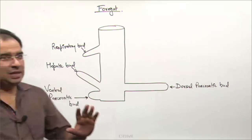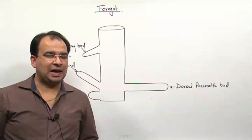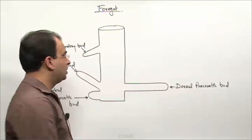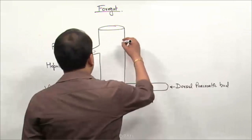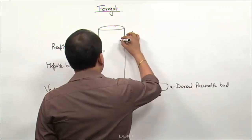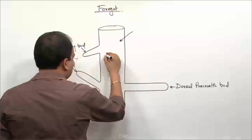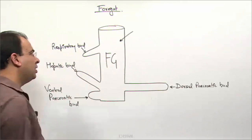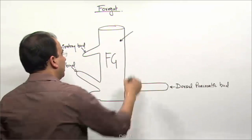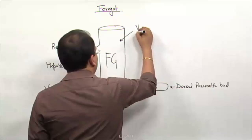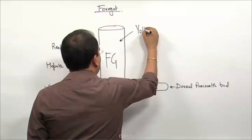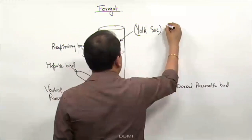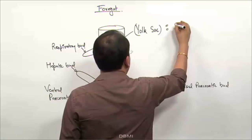The gut tube is derived from the yolk sac, and the yolk sac is endodermal. So remember, anything derived from the foregut — we are only talking about the foregut — is derived from the yolk sac, which means it is endodermal.